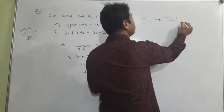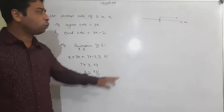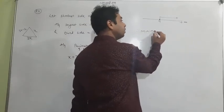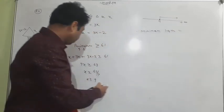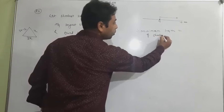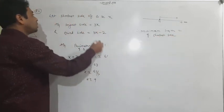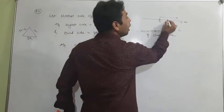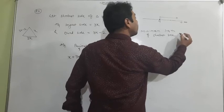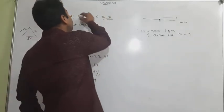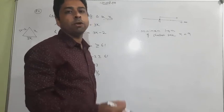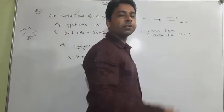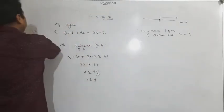So x is greater than or equal to 9 — either equal to 9 or greater than 9. The question asks for the minimum length of the shortest side. Since x was assumed as the shortest side, and all values are greater than or equal to 9, the minimum value of x is 9. This is a simple word problem — just understand it, make an inequality, and solve.